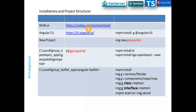For detailed Node.js setup, look at screencast number two. For Angular CLI, just install it and create a new project using 'ng new geospatial'. Then navigate to your directory — such as the C drive, geospatial directory — and install OpenLayers with 'npm install ol', or the additional 'ngx-openlayers' package. Once everything is installed, you can start the project.